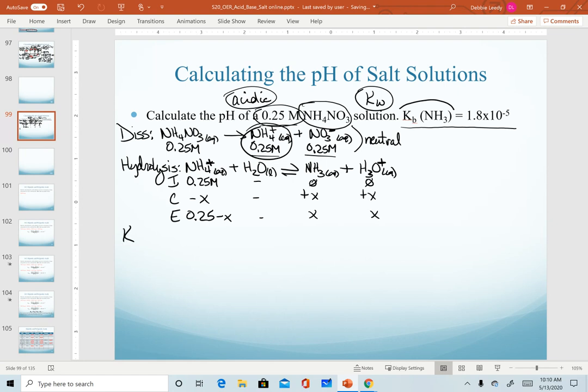When we're writing our equilibrium expression, we have to remember that we are calculating the amount of hydronium in solution. Therefore, we need to use a Ka expression. We write our equilibrium expression first, products over reactants, and then our equilibrium equation, plugging in our equilibrium values.